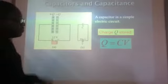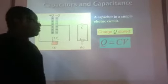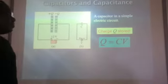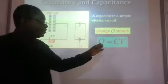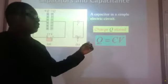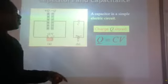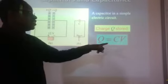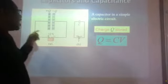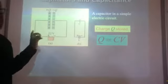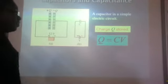The formula for capacitance comes from Q = CV, which means capacitance is equal to the ratio of the charge stored to the potential difference across the plates.